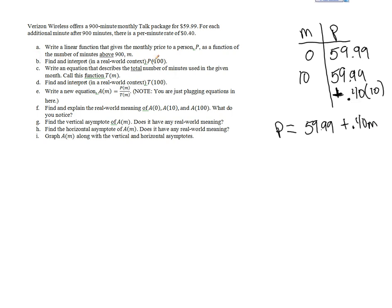Now we want to find and write P of 100. P of 100 means if you use 100 overage minutes, you're going to pay $59.99 plus $0.40 times 100 minutes. That's going to be $40 more you're going to have to pay for those 100 minutes. You might want to up your plan, but that would be $99.99 for 100 overage minutes.